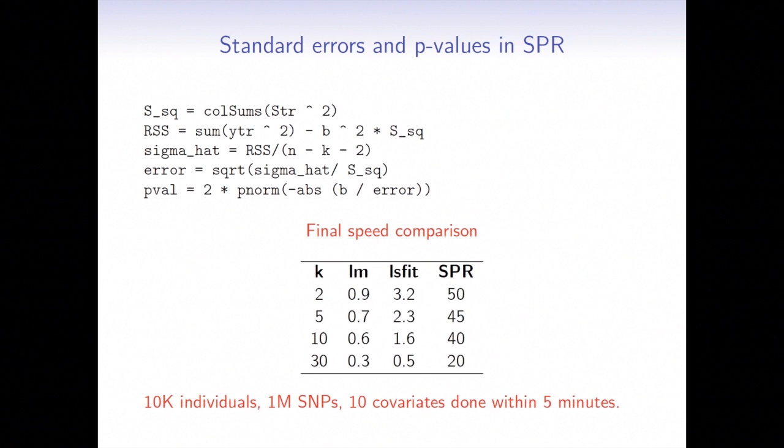However, the computational benefits start to disappear once the number of covariates is increasing. And our semi-parallel regression is working 40, 50, 60 times faster. And now we can do the GWAS for 1 million SNPs with 10 covariates within 5 minutes. And that's already for beta, standard errors, and the p-values.